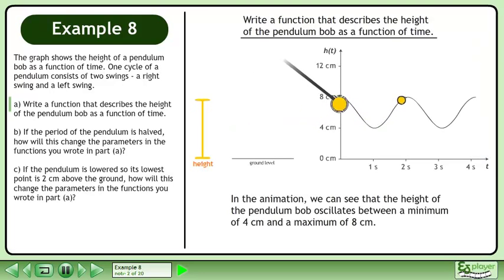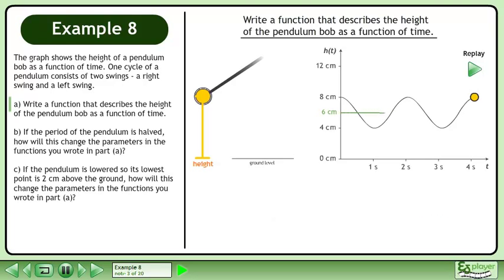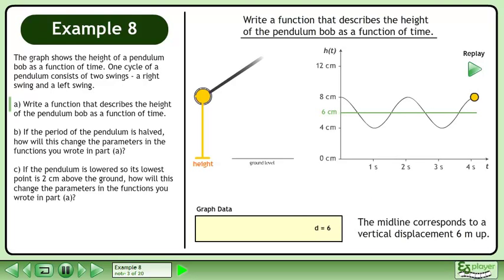In the animation, we can see that the height of the pendulum bob oscillates between a minimum of 4 cm and a maximum of 8 cm. The midline corresponds to a vertical displacement of 6 cm. The amplitude is 2 cm.